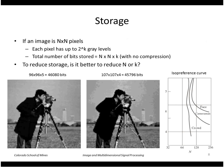Looking at the amount of storage these effects have, we can easily calculate the number of bits by multiplying the number of pixels — M by N times the number of bits per pixel k. This gives the total number of bits in the image with no compression. We'll see how compression can help later in the course.